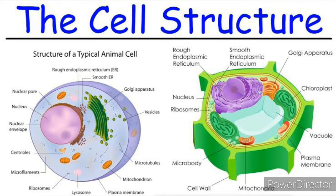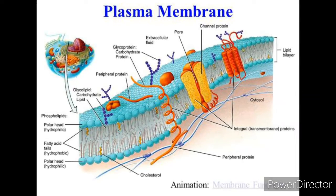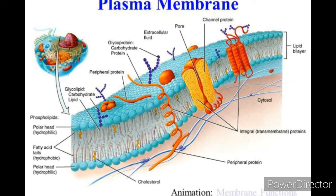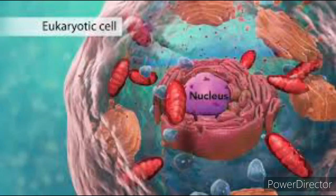The cell is the basic structural and functional unit of life. The cell is separated from the external environment by a biological membrane commonly called the plasma membrane. Inside the plasma membrane, there is a cytoplasm — a water-like medium in which various biochemical reactions take place, for example protein synthesis.